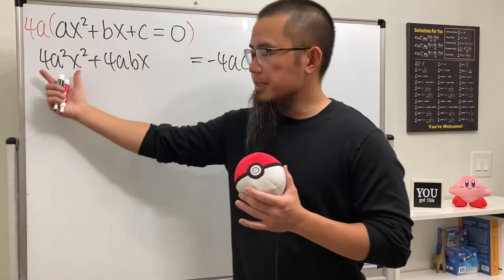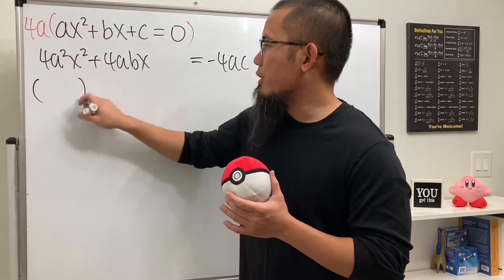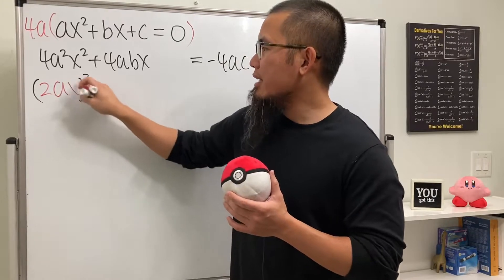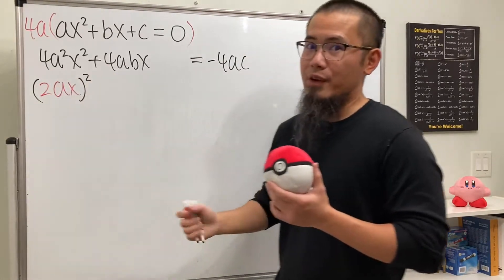Now, for this part, this is nicely equal to some parentheses squared, and inside is 2ax. Right? If you square that, you get this. Very nice.